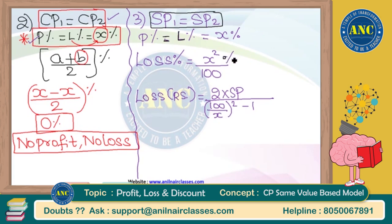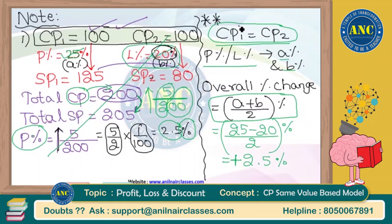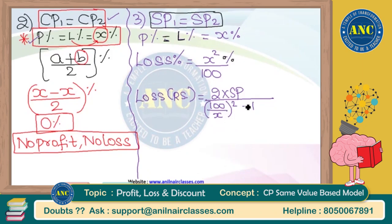Let me repeat all three key points one final time. Key point 1: cost prices same, profit/loss percentages different → overall change = (A + B) / 2 percent. Key point 2: cost prices same, profit and loss percentages also same → no profit, no loss. Key point 3: selling prices same, profit and loss percentages same → always a loss; loss % = X² / 100, and loss in rupees = 2 × SP divided by [(100/X)² − 1].